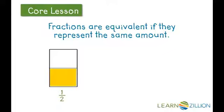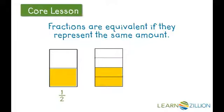Now let's look at that same amount shown in a different way. I will divide this second rectangle into four equal parts. The fraction that now represents the shaded amount is two-fourths. The denominator is four because we now have four equal parts, and the numerator is two because two out of the four equal parts are shaded. Two-fourths is equivalent to one-half because they represent the same amount.